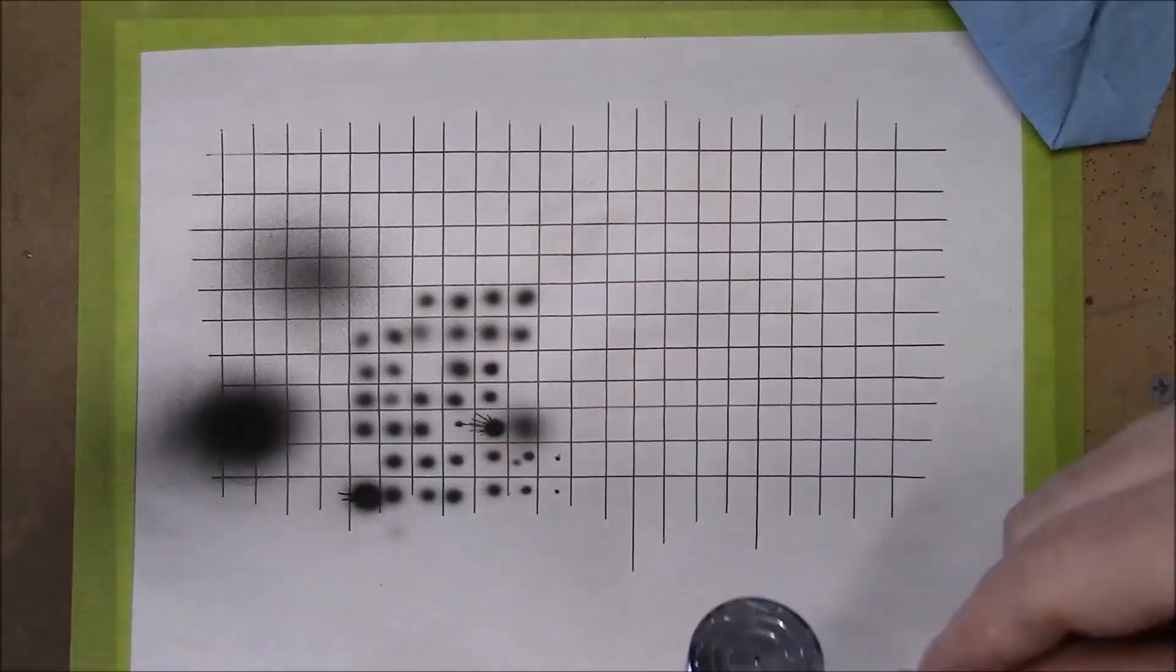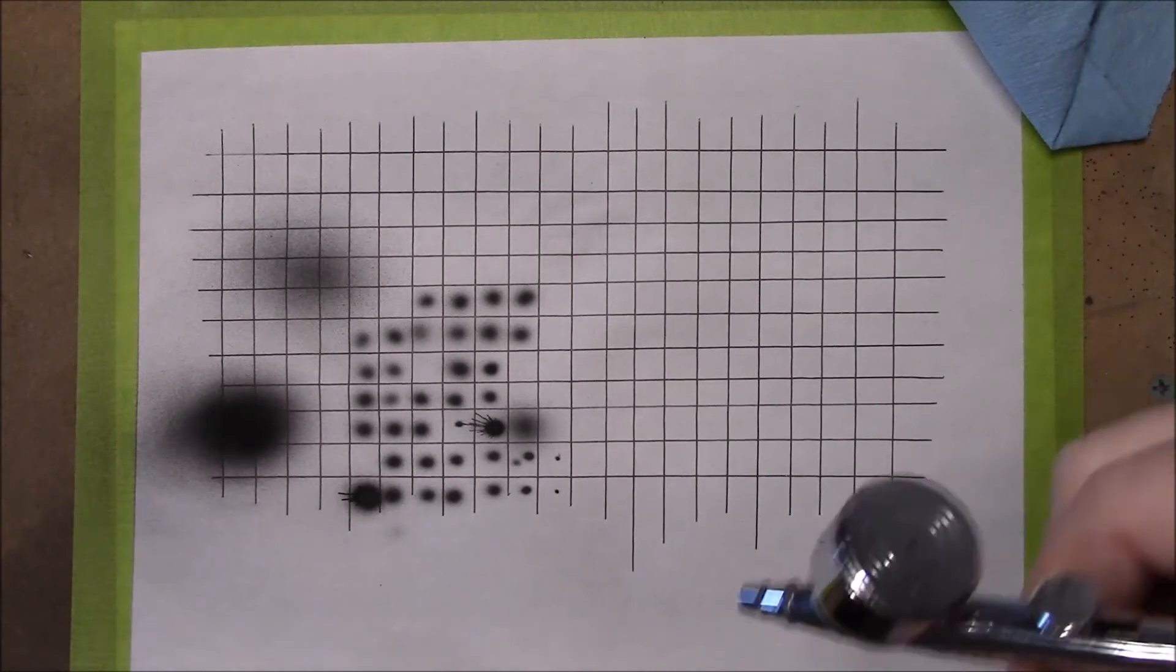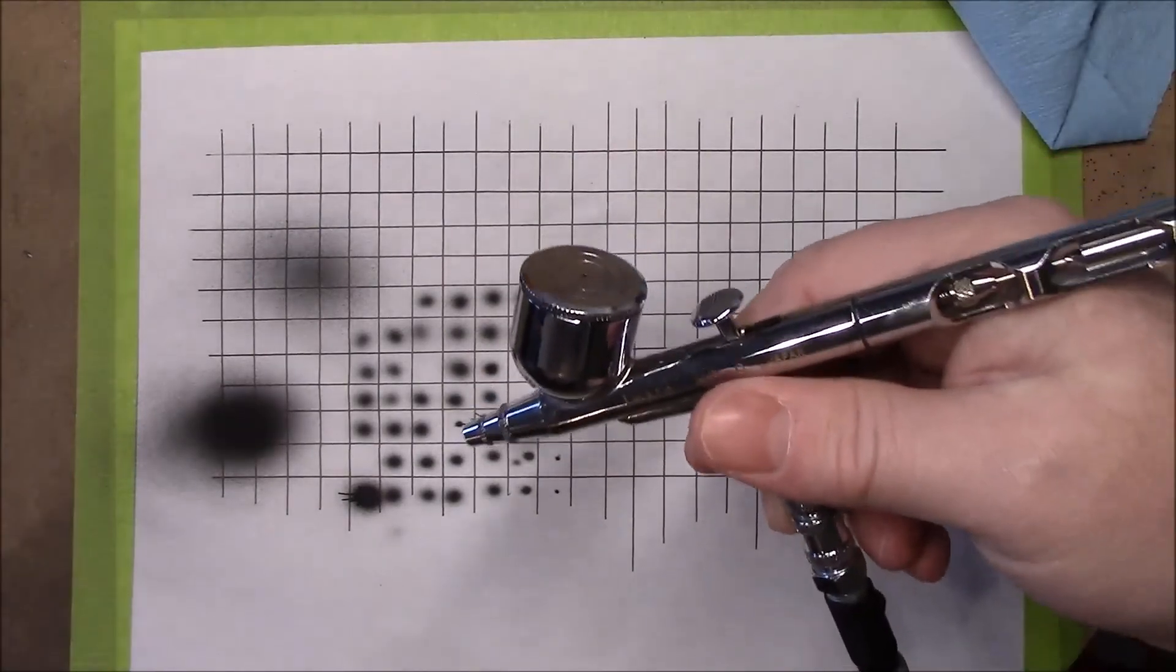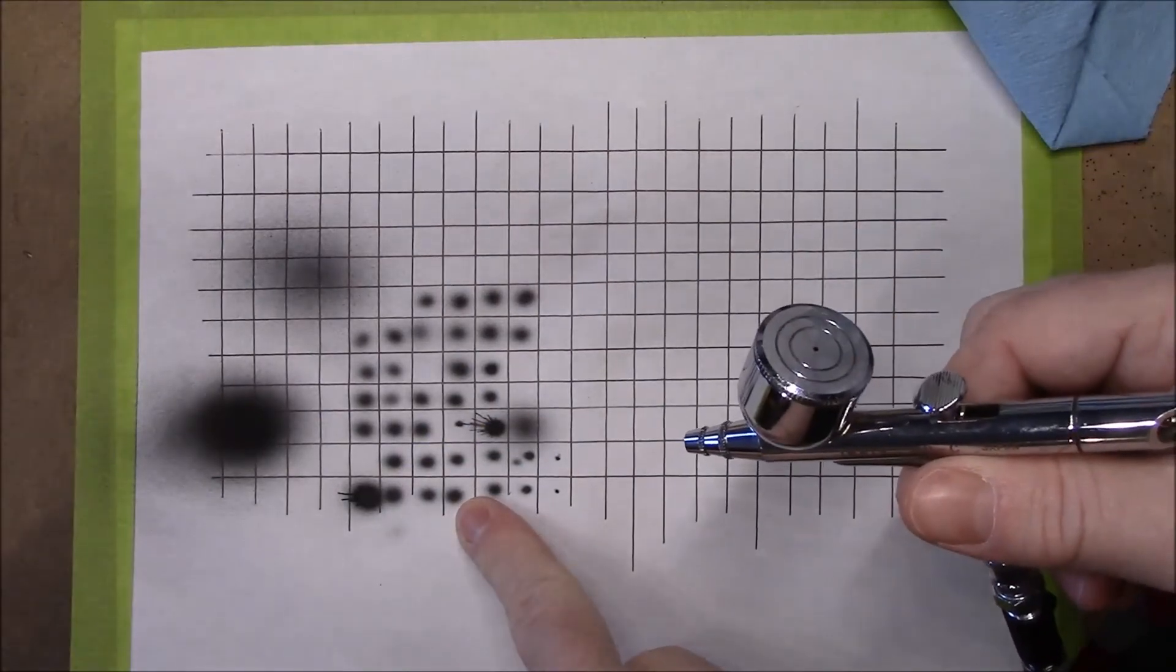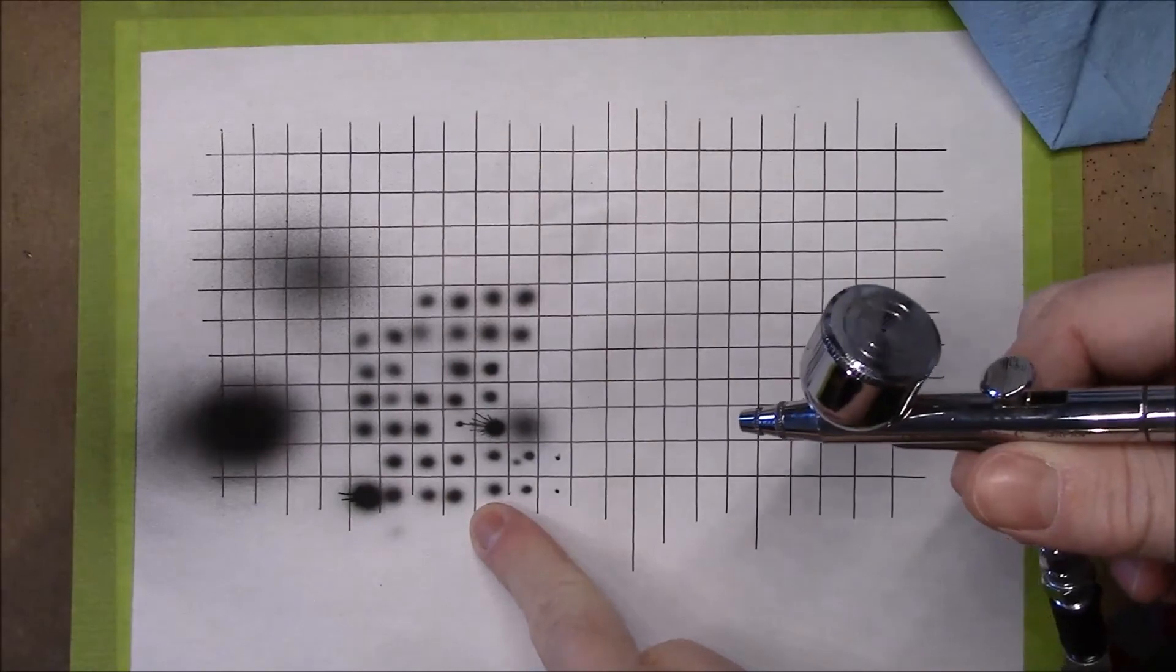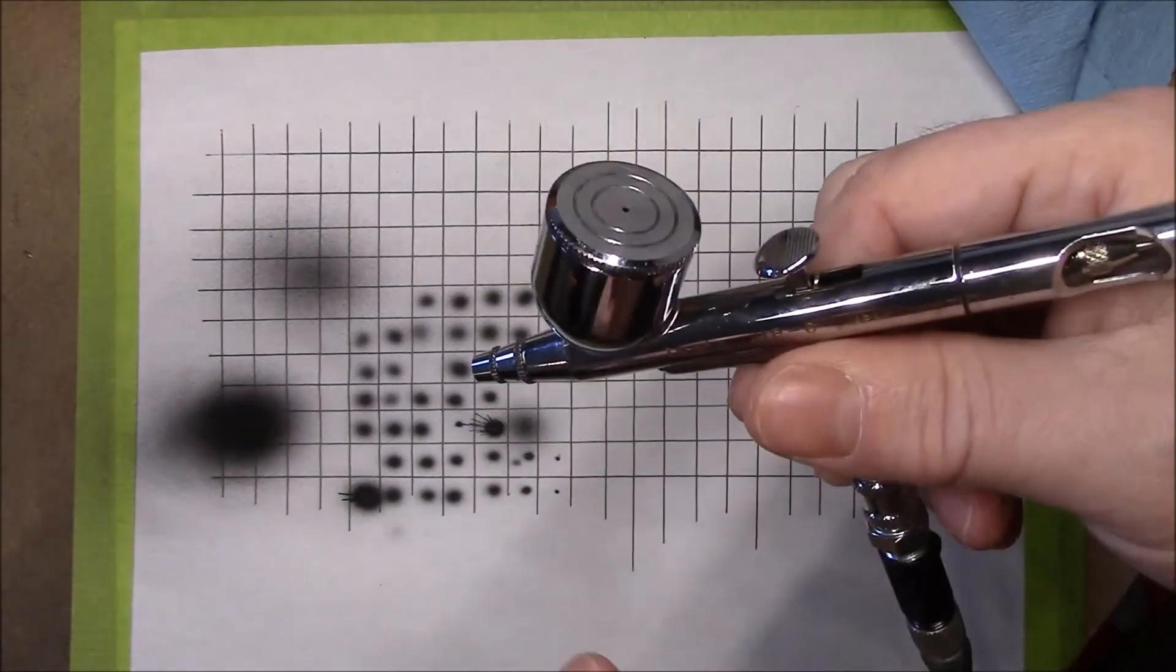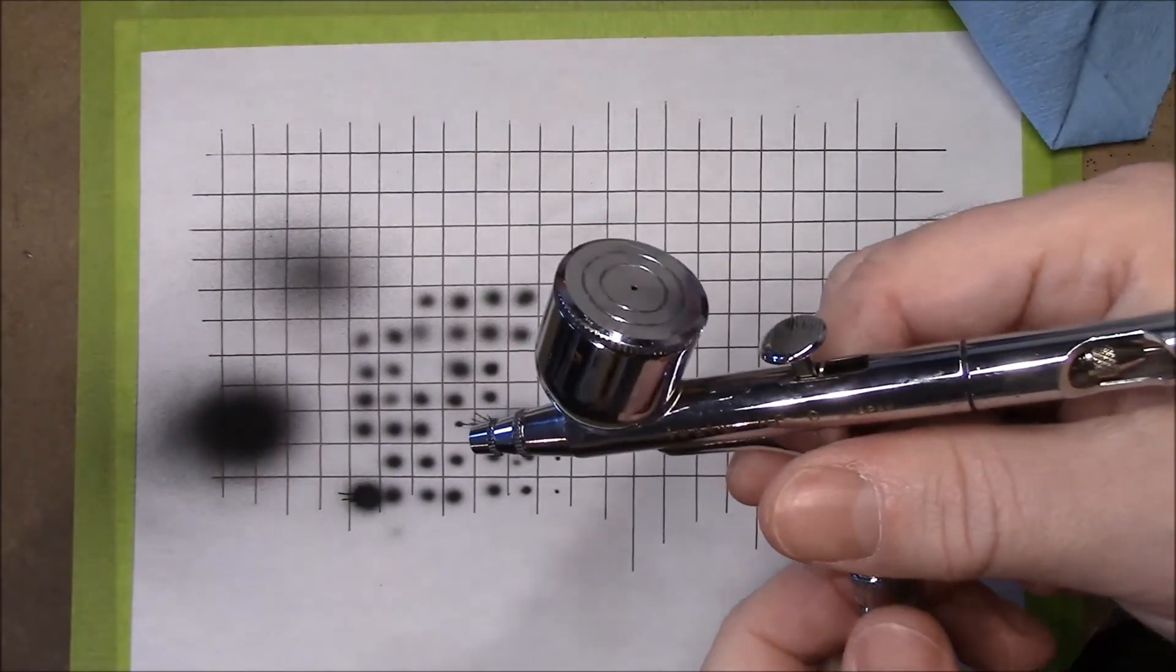Once you get used to this and you're feeling pretty confident about where your dots are laying and how you're spraying and how your paint's mixed and you can do pretty clean dots, then pick up a model. Start here first. This is what's important. Learn your tool. Learn it first. Learn how to control it. And then you won't be disappointed with it. You won't mess up a model immediately. Every time you won't have this horrible tip drive because you don't have control of the trigger. That is my biggest advice to anyone who's new to airbrushing.